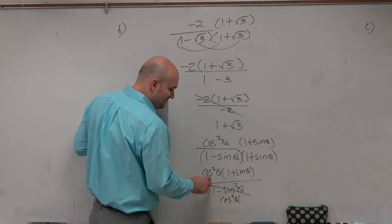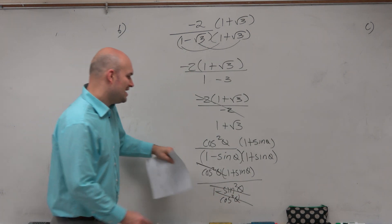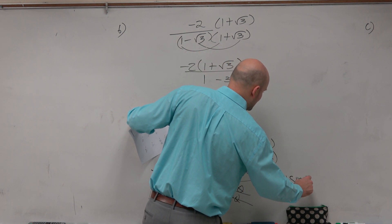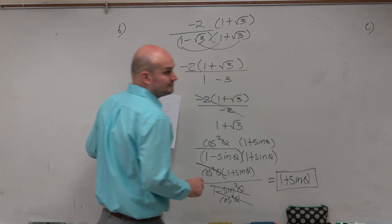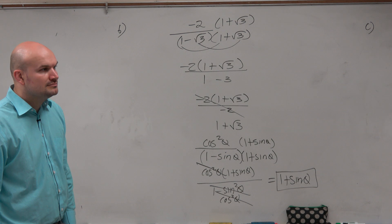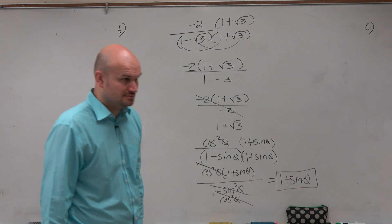And then, guess what divides out? The cosine squareds of theta. So now, we're just left with 1 plus sine of theta. Pretty cool, huh?